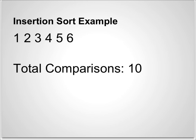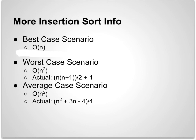And now for more information about Insertion Sort. In our best case scenario, we have a Big O of n. In our worst case scenario, we have a Big O of n squared — this might occur, for instance, when the list is in reverse order — and our actual would be n * (n+1) / 2 + 1. In our average worst case scenario, we have a Big O of n squared, and an actual of (n² + 3n - 4) / 4.